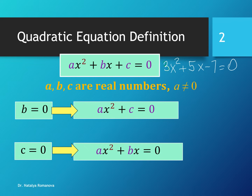The coefficient a equals 3, coefficient b equals 5, and coefficient c equals negative 7. We have two special cases of the quadratic equation.